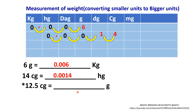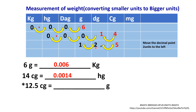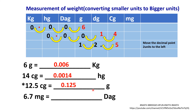Now, 12.5 centigram into grams. Here the number already has a decimal point — no need to worry. Write 12.5 under the centigram column; 5 is the starting point. We are converting to grams, which is 2 jumps to the left. Move the decimal point 2 units to the left. Therefore, 12.5 centigrams equals 0.125 grams.